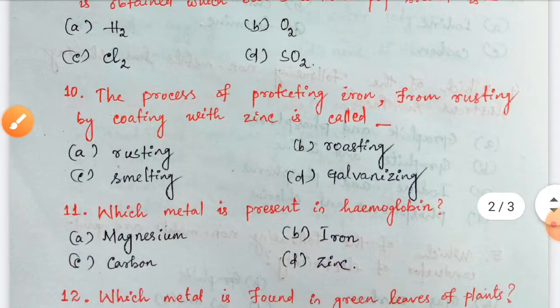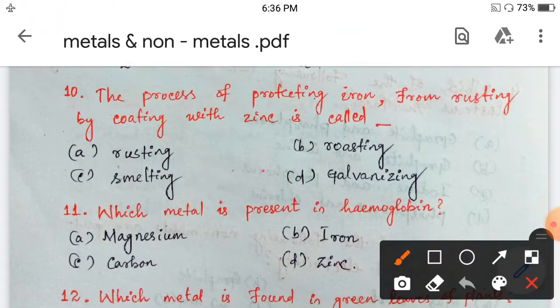Next. The process of protecting iron from rusting by coating with zinc is called rusting, smelting, galvanizing. When rusting occurs, to protect it, what do we do? We coat it with zinc. That process is called galvanizing. Option D.